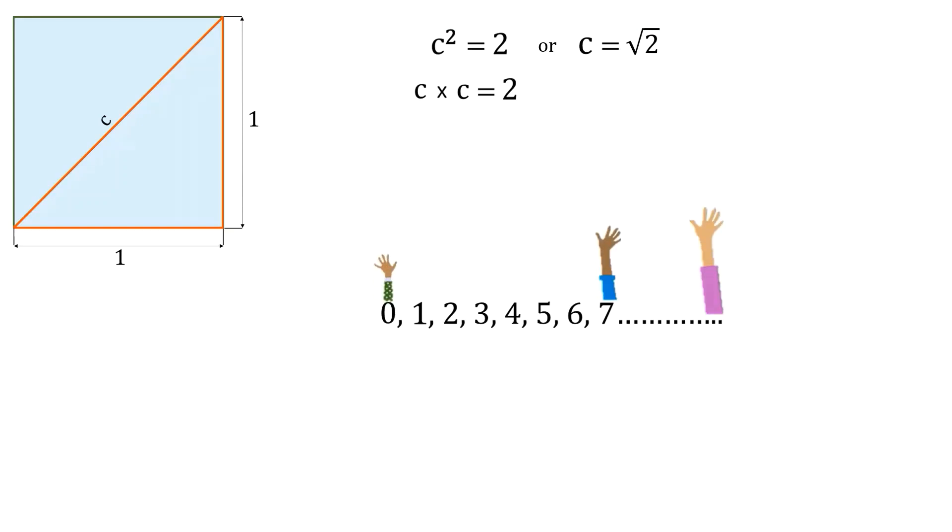Of course, c cannot be equal to zero. Therefore, let us take the next number which is one. Alright, when c is equal to one, we get c square as also equal to one. But we want c square to be equal to two. Hence, we are short of the target. And the value of c, that is the value of square root of two, must be greater than one.